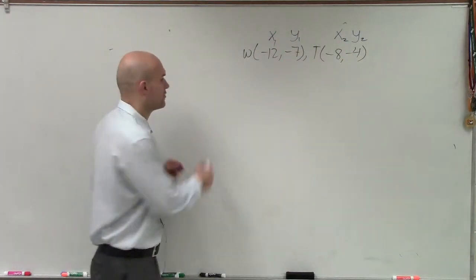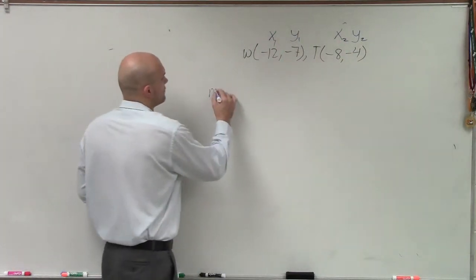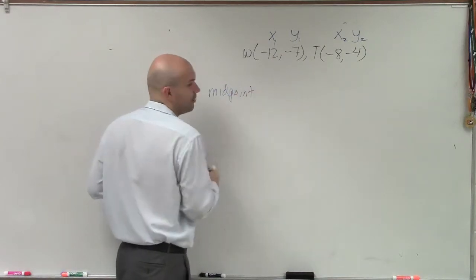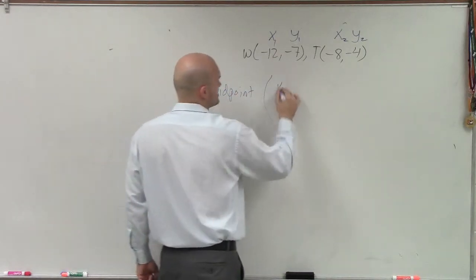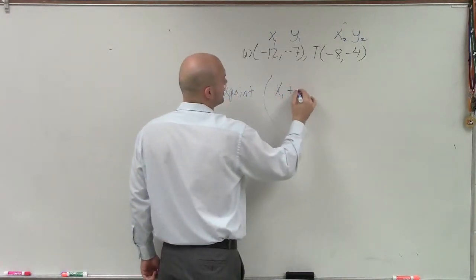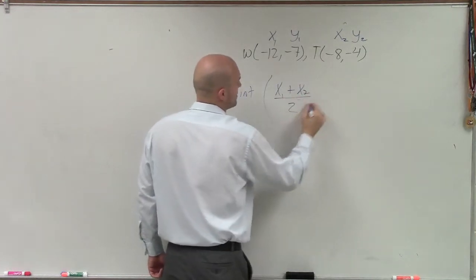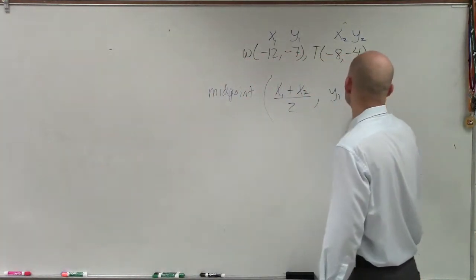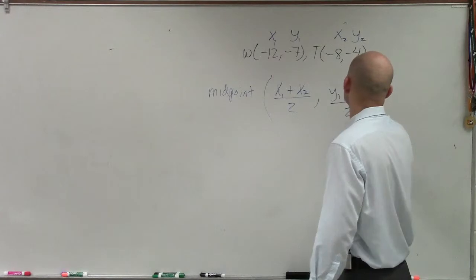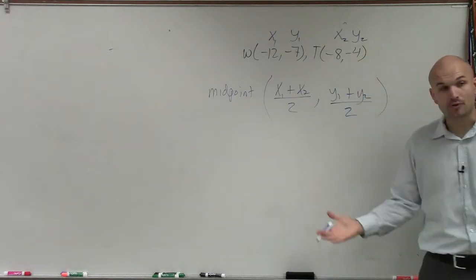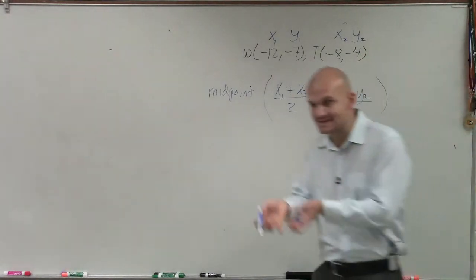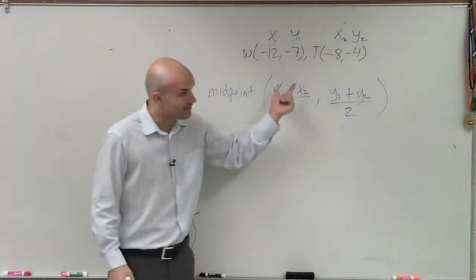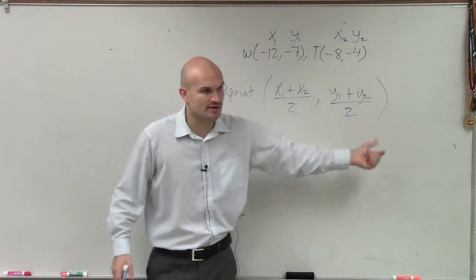Then we go to our midpoint formula. So the midpoint formula — if I want to determine the midpoint between two points — looks something like this: x1 plus x2 divided by 2, comma, y1 plus y2 divided by 2. And the midpoint creates a coordinate point, so you have your x and your y coordinates.